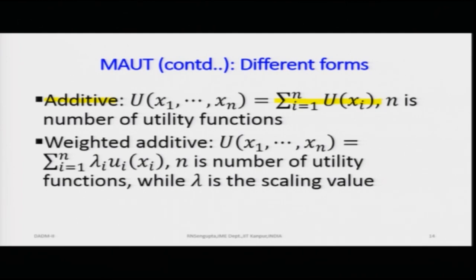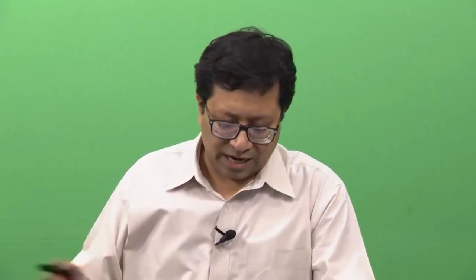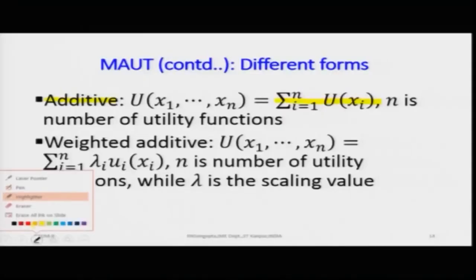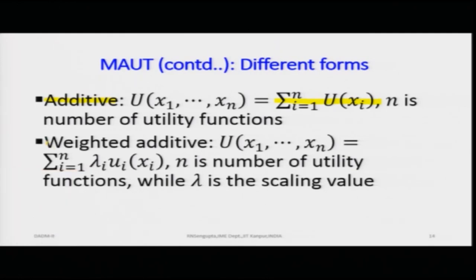If we add up the utility functions and also assign weightages, we get the weighted additive function. The weights lambda 1, lambda 2, lambda 3 through lambda n (or lambda k) are known as the scaling functions for the utility functions.